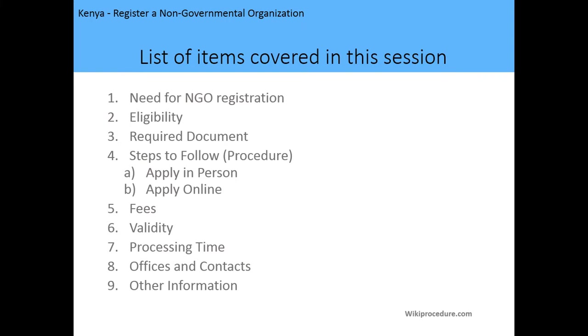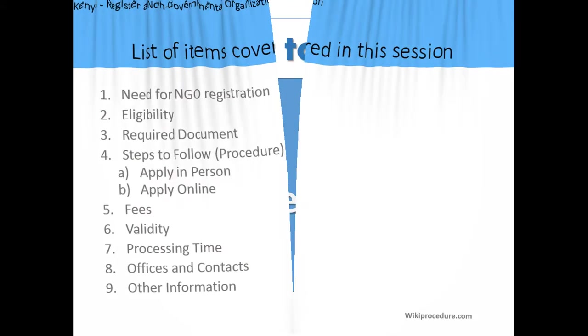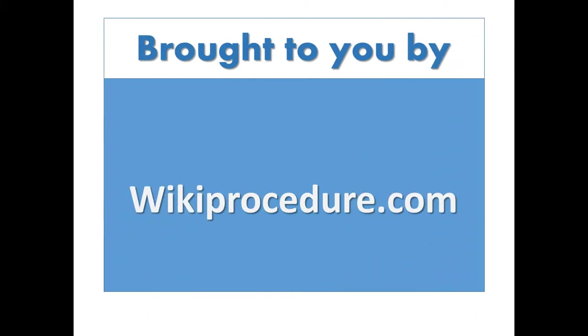The list of items we are going to cover in this session includes: the need for an NGO registration certificate, the eligibility requirements, the required documents, steps to follow while making the application, the fees, the validity period, processing time, office location and contact information, and any other relevant information on how to make the registration application. Welcome to our presentation, brought to you by WikiProcedure.com.